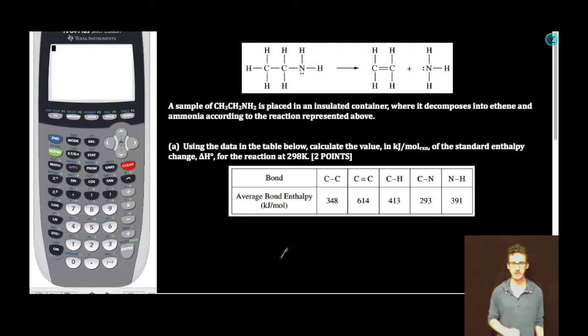Part A. Using the data in the table below, calculate the value in kilojoules per molar reaction of the standard enthalpy change, delta H, for the reaction at 298 Kelvin. Easy, but errors are commonly made.